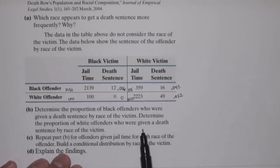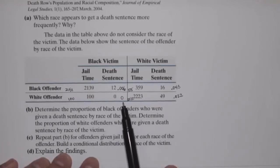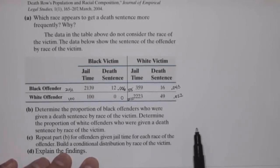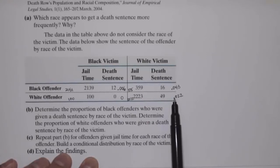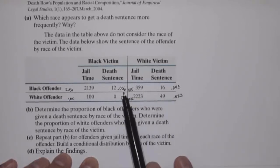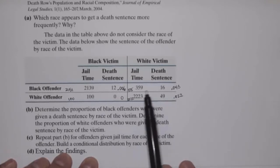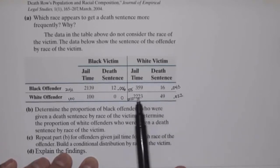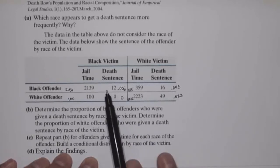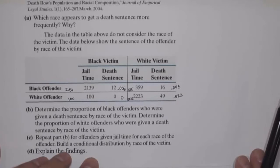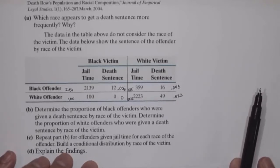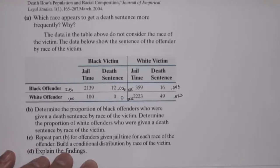So based on these findings, what's happened here is that originally it looked like white offenders were given the death sentence more frequently. But when you consider the race of the victim, we have the opposite effect. Now it looks like black offenders are in fact given the death sentence more frequently than white offenders in both cases — 0.006 versus 0 if the victim was black, and 0.043 versus 0.022 if the victim was white. If we take the race of the victim into consideration, the original association inverts — it appears the opposite of what it was originally.